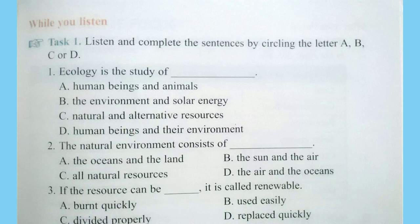For example, grass for animals is a renewable resource. When cows eat the grass, the resource is used. If the soil is fertilized and protected, more grass will grow. Coal, however, is non-renewable because it takes millions of years to make coal.